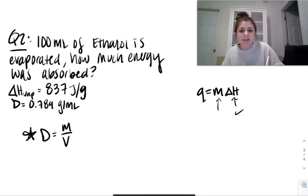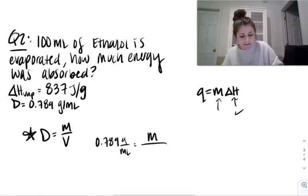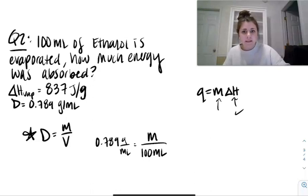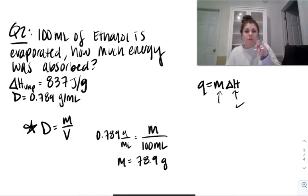So here I'm going to plug everything into the density equation. So here I have 0.789 grams per milliliter. I'm solving for mass and the volume is 100 milliliters. So the mass ends up being 78.9 grams. Because we're actually going to multiply those two values together. So 100 times 0.789. Now that we have our mass, I'm going to plug this in to our equation.